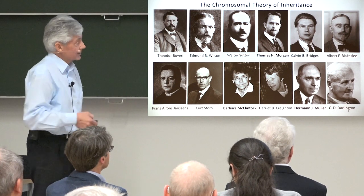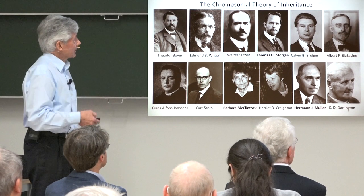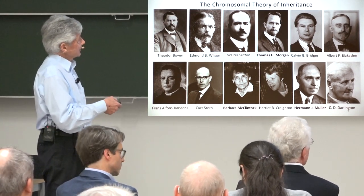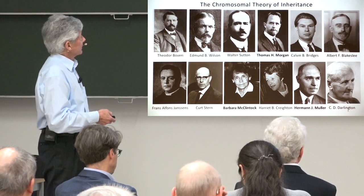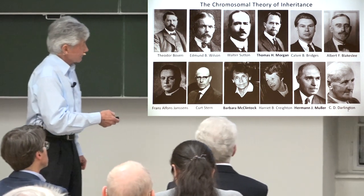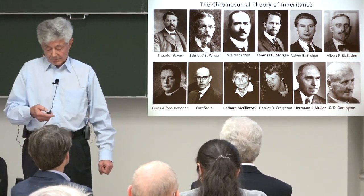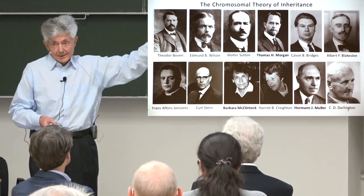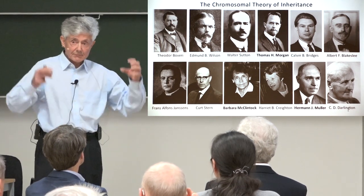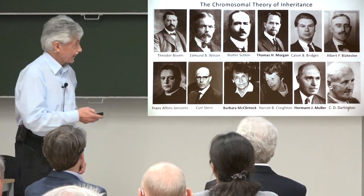Kurt Stern independently did the same as Barbara McClintock and Harriet Creighton, but with Drosophila, while Barbara McClintock worked with maize. The third Nobel Prize was for radiation mutation. And there is a later Nobel Prize by the people who discovered the molecular basis of chromosome ends.